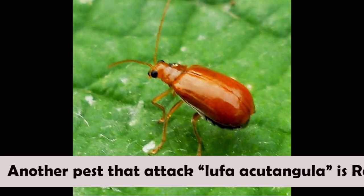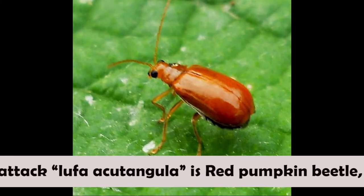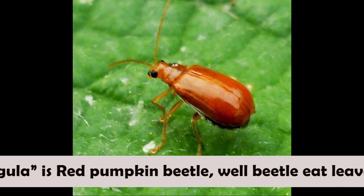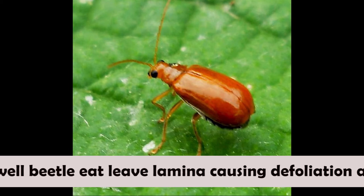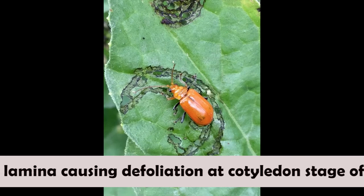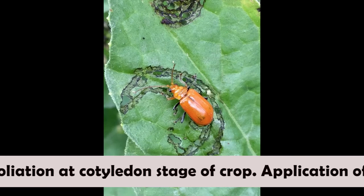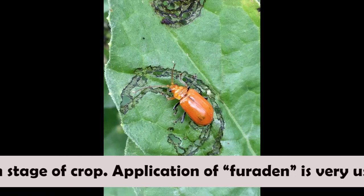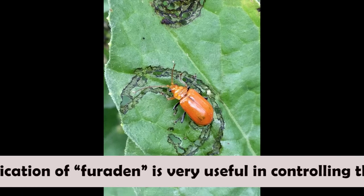Another pest that attacks Luffa acutangula is the red pumpkin beetle. The beetle eats leaf lamina causing defoliation at the cotyledon stage of the crop. Application of furadine is very useful in controlling this pest.